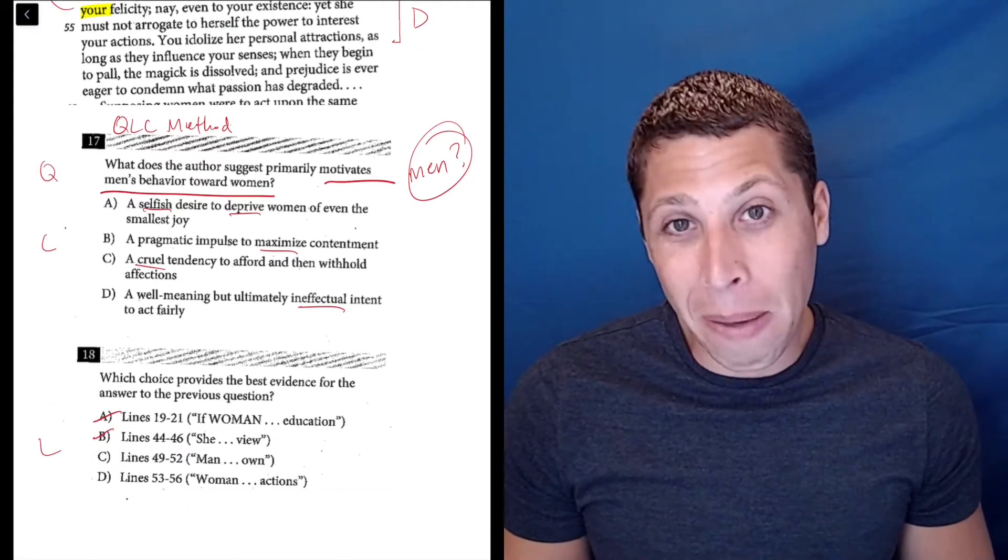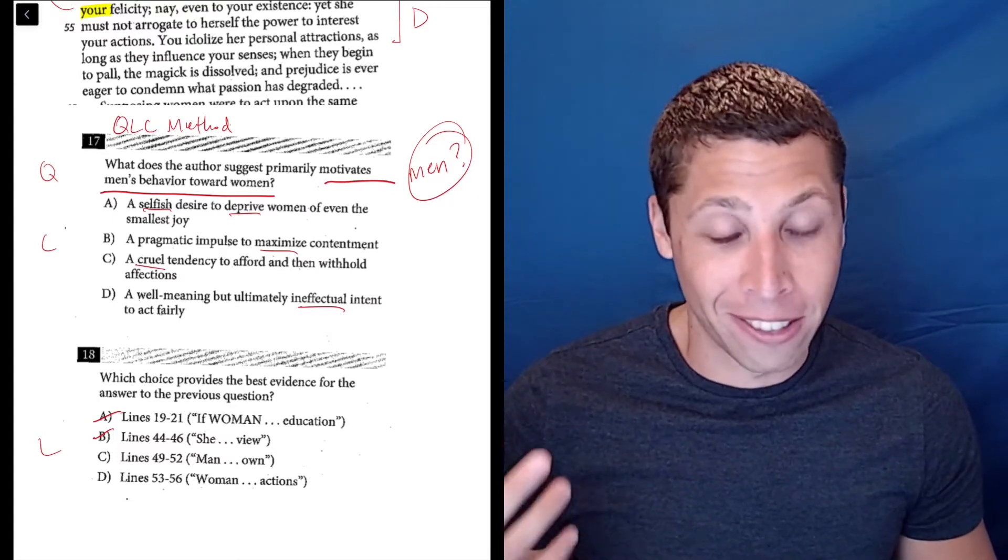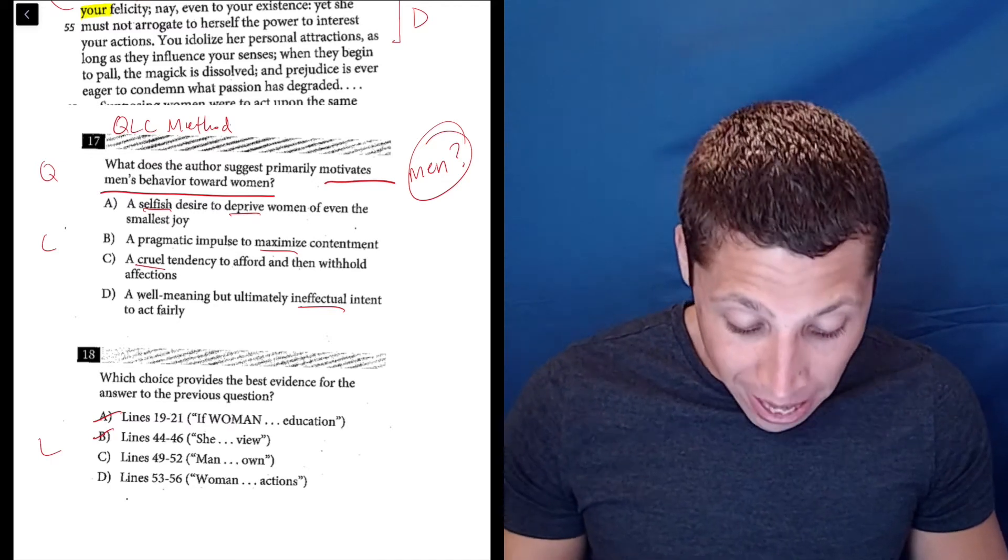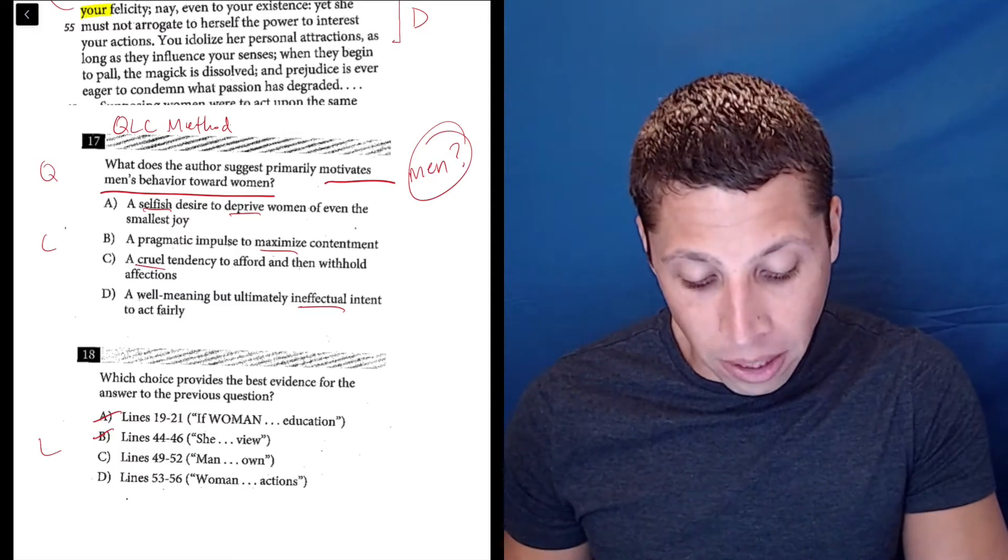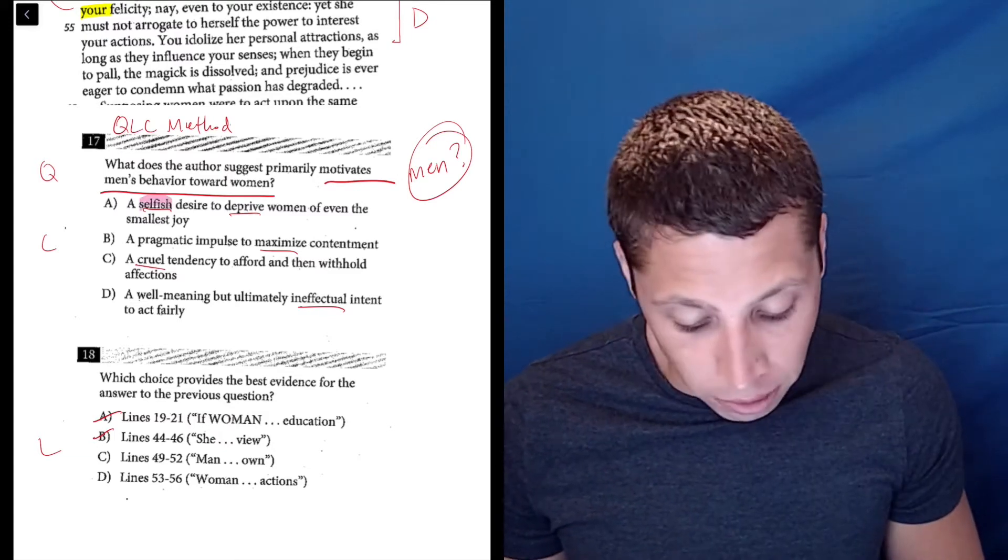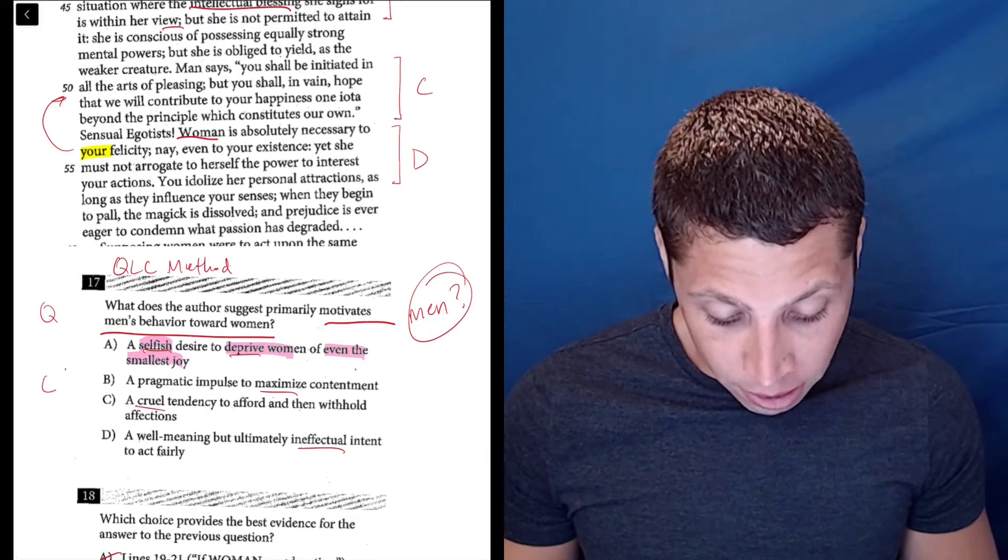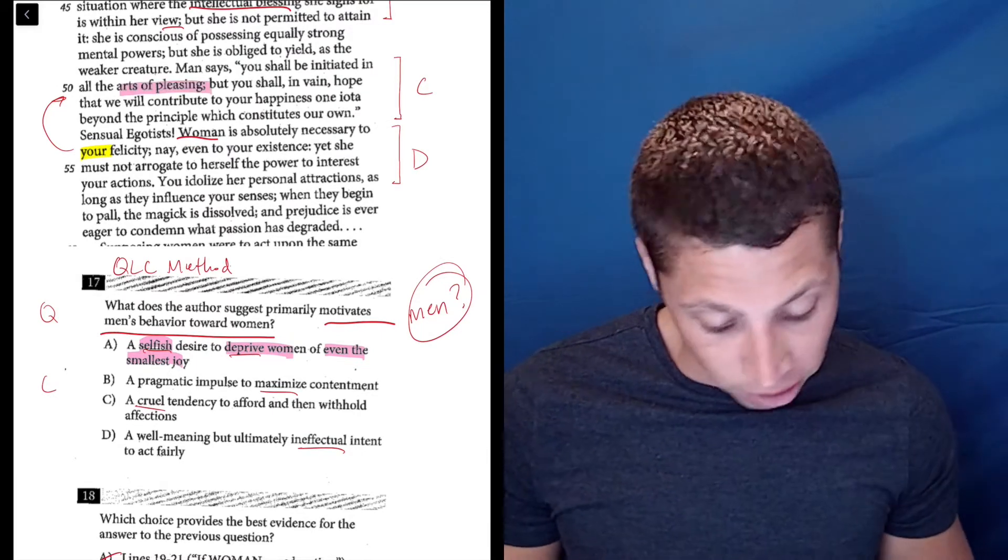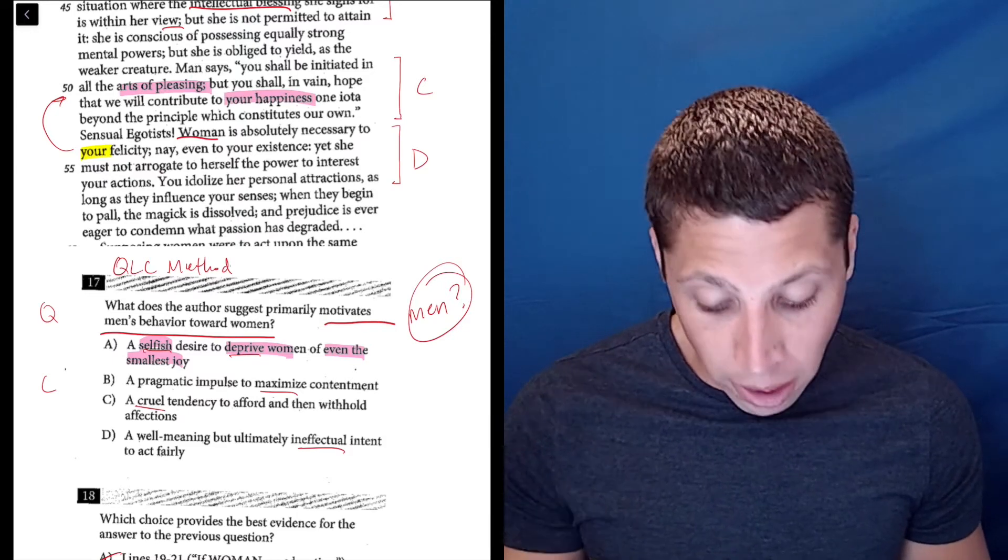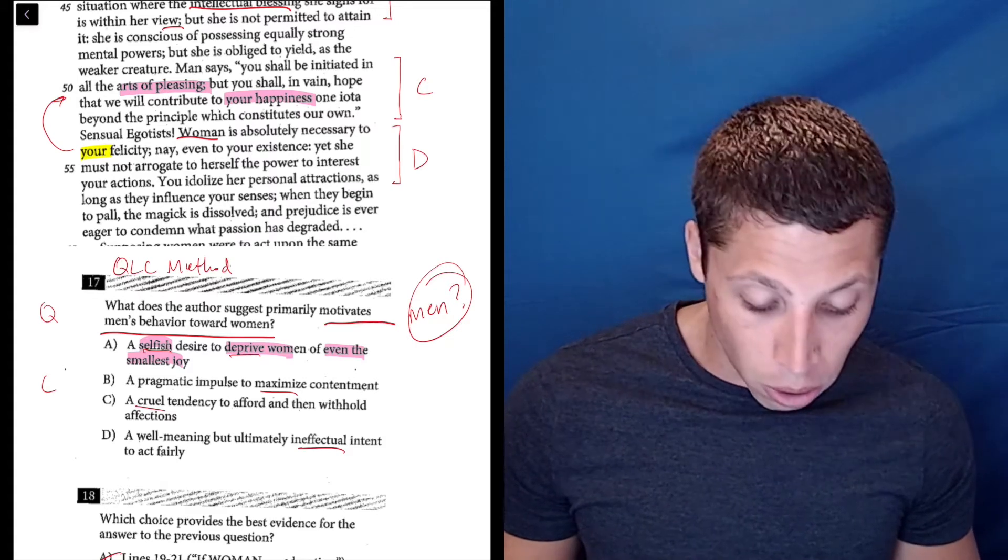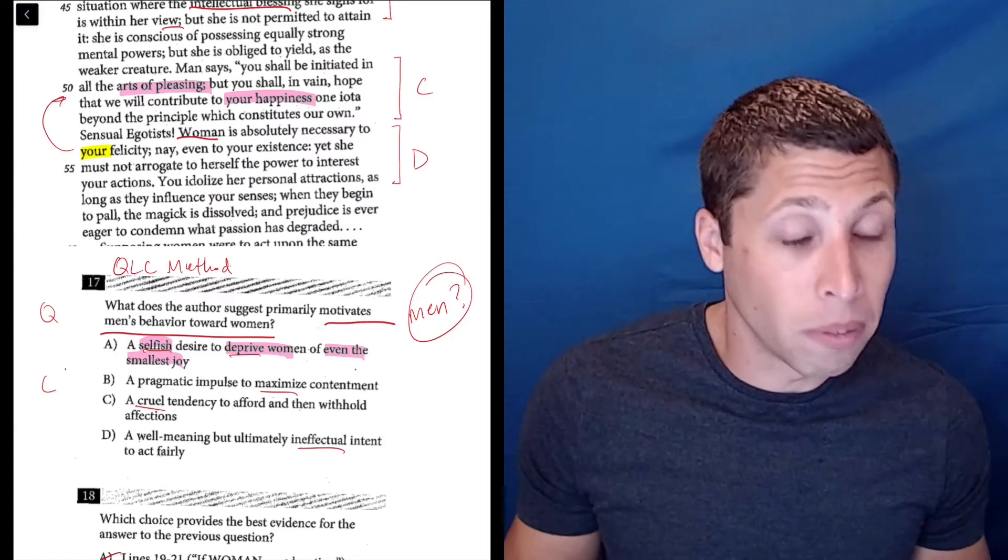We got now maybe a 50-50 shot of getting question 18 right. Now let's look at question 17. Choice A: men are primarily motivated by a selfish desire to deprive women of even the smallest joy. There's a couple of words I would want to think about here: selfish is definitely strong, depriving women of things, and even the smallest joy. Let's look at these lines. 'You shall be initiated in all the arts of pleasing'—maybe that matches with joy a little bit—'but you shall in vain hope that we will contribute to your happiness.' That's definitely joy. So maybe they both seem to be talking about happiness and joy. That's a little bit of a connection. Let's leave choice A.